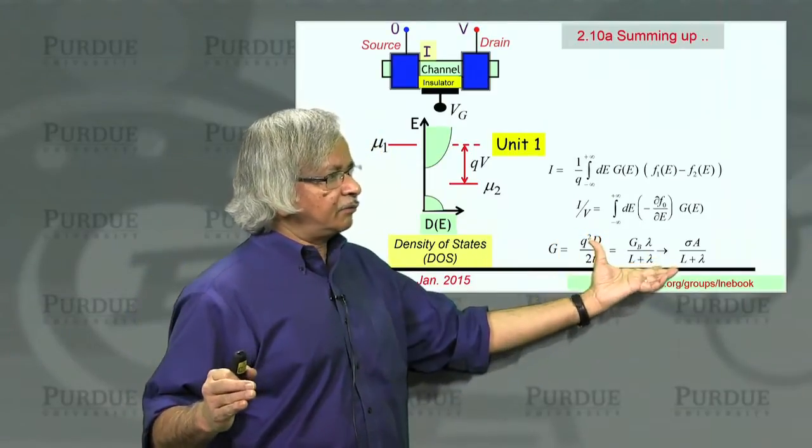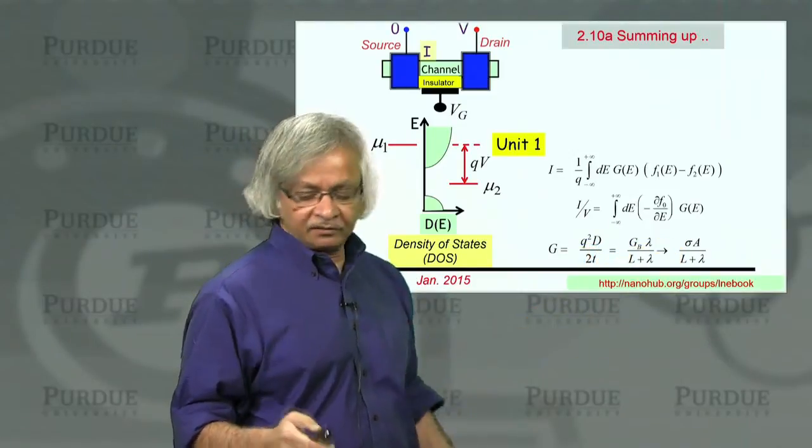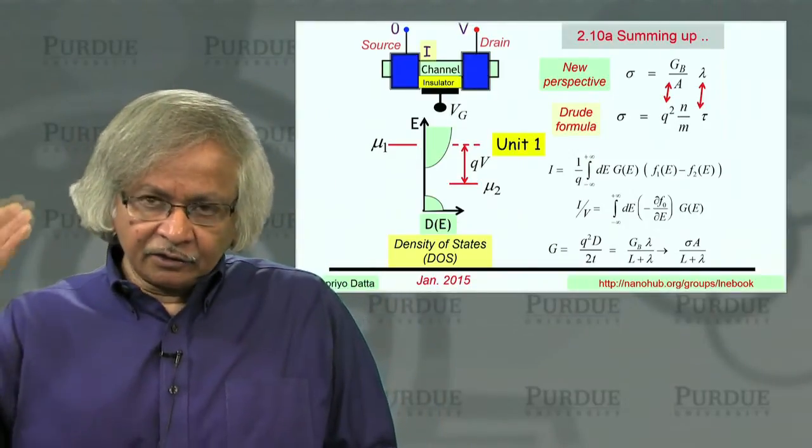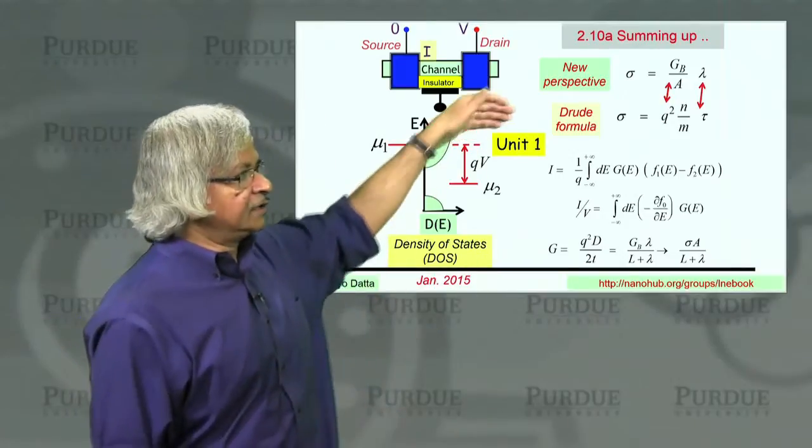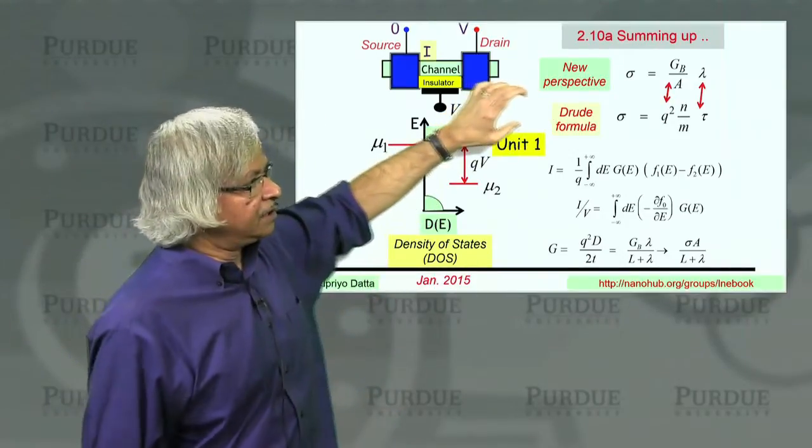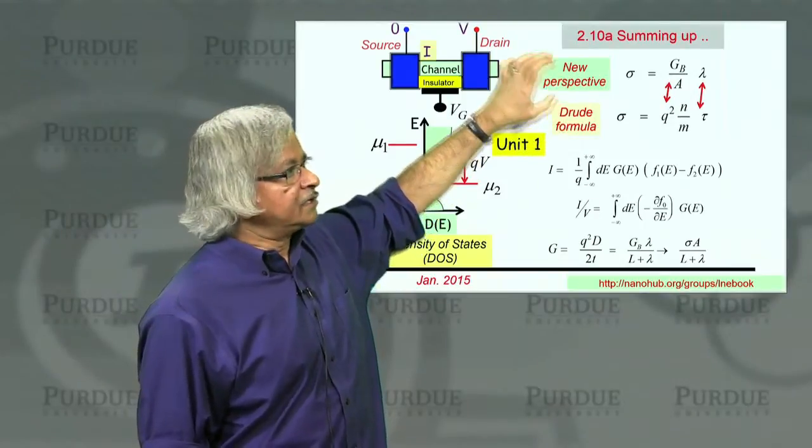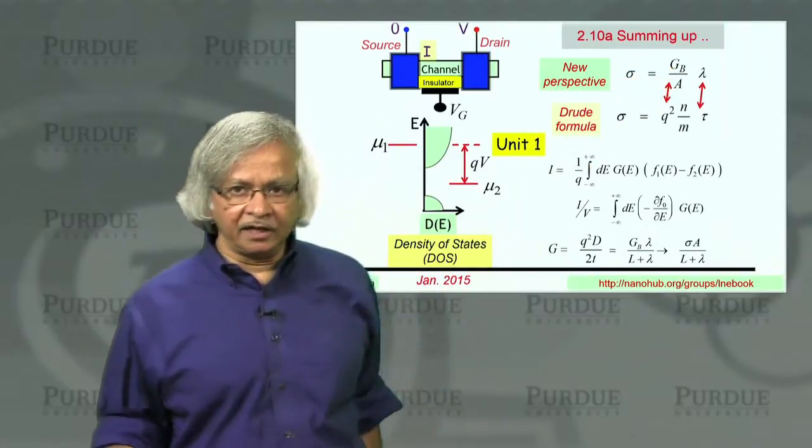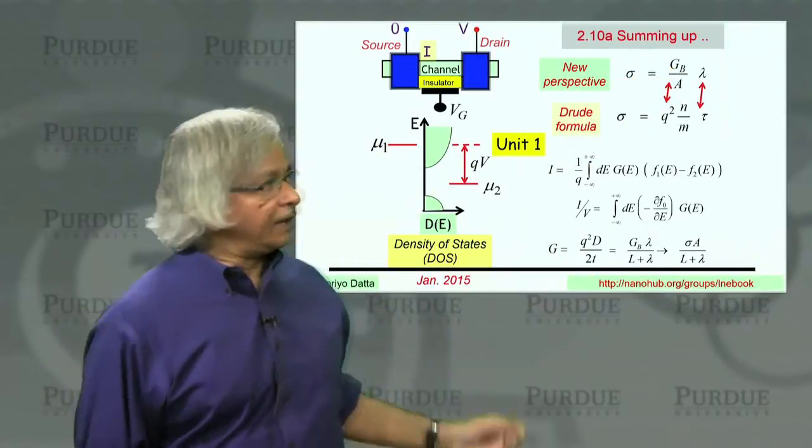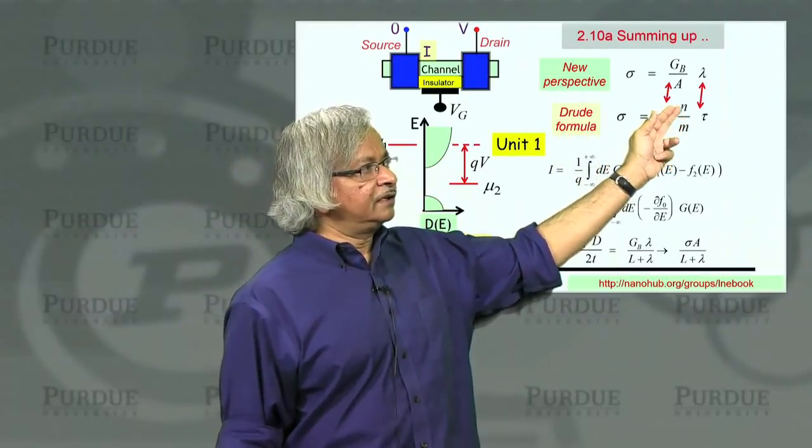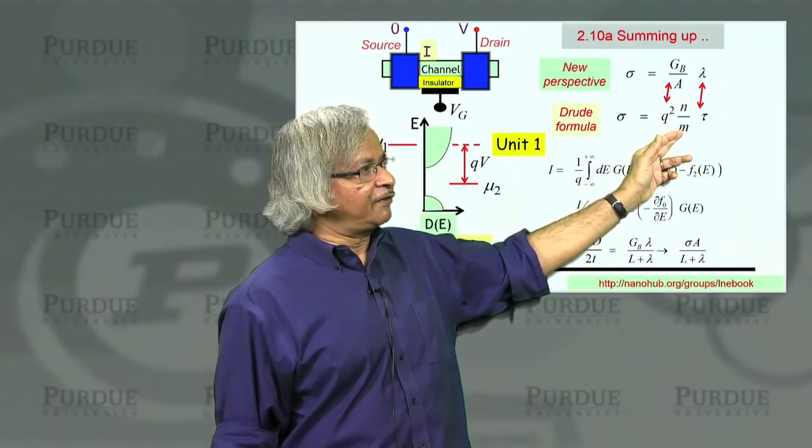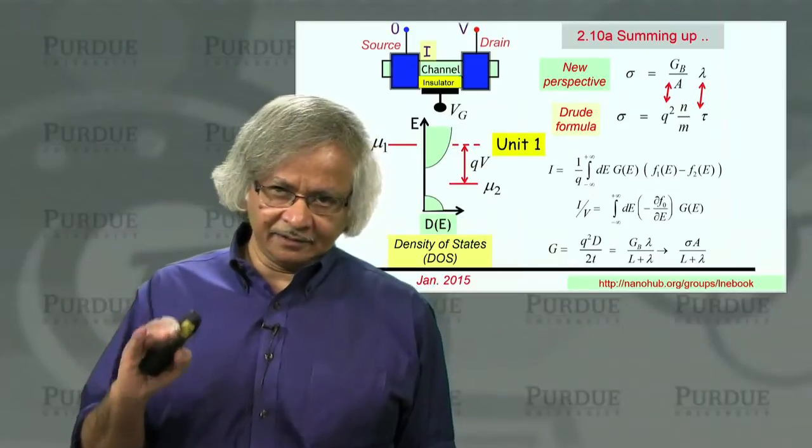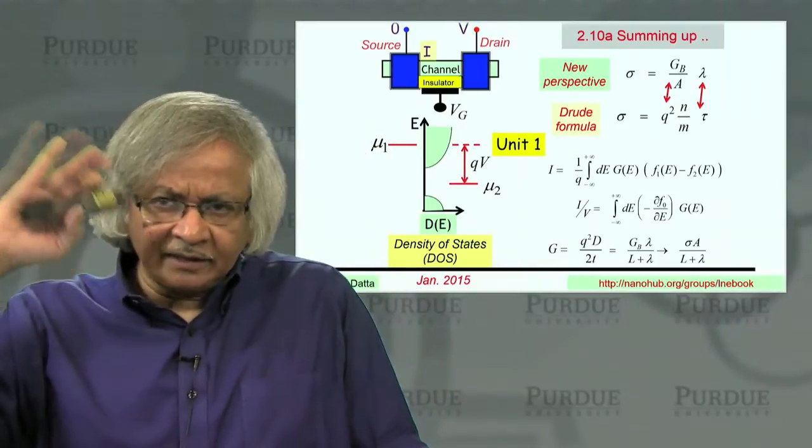This way of looking at it gives you a different expression for conductivity, which is what we call the new perspective. To contrast that with what you normally learn starting from freshman physics or any textbook usually is this Drude formula. In this new perspective, the conductance is ballistic conductance per unit area times the mean free path. Whereas in the Drude formula, it's like free electron density, effective mass, and this mean free time.